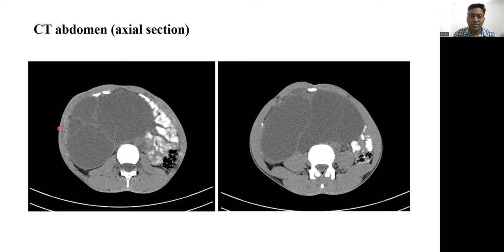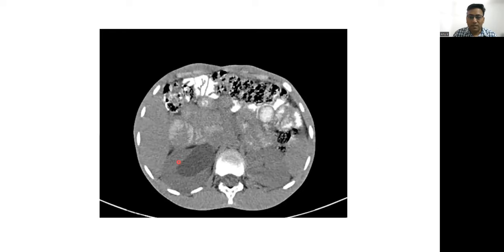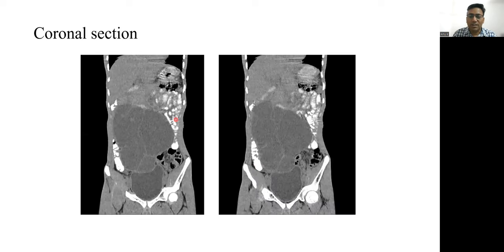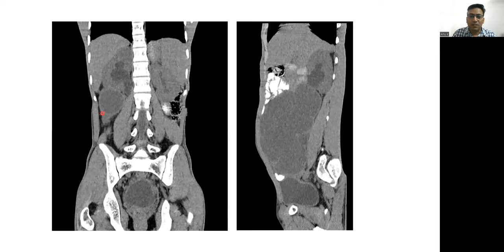This is the CT abdomen axial section. We can see a large cyst occupying the whole of the abdomen with thin septa. There is mass effect on the right proximal ureter causing hydronephrosis of the right kidney. This is the coronal section showing extension of the cyst from the right side of the diaphragm to the right side of the pelvis, with mass effect on the urinary bladder. The coronal and sagittal sections clearly show hydronephrosis of the right kidney due to the mass effect of this multicystic lesion.